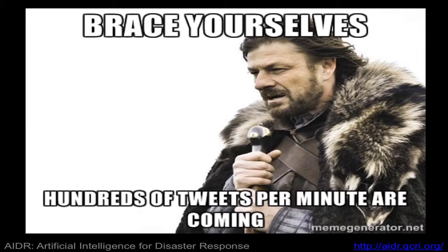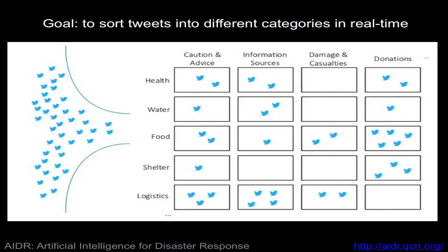We have observed up to 270 tweets per minute in some natural disasters, and this exceeds by far the capacity of humans to manage. Our objective is to try to sort these tweets into categories, into humanitarian clusters, into credibility levels, or into any arbitrary categories that you may think for this data.